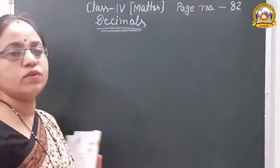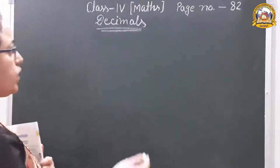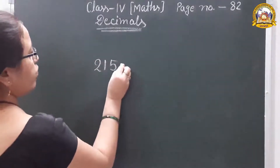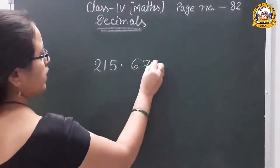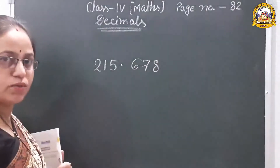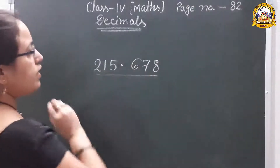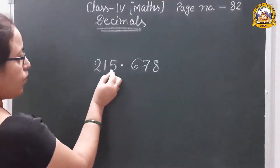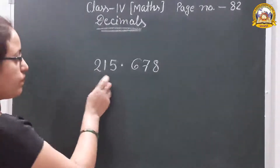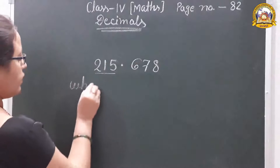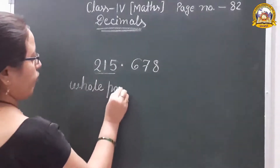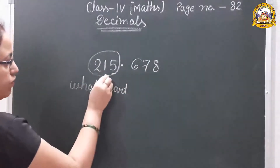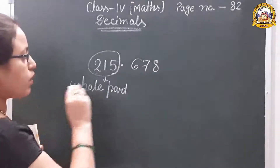What do you know about decimals and how to write a decimal number? Suppose a number: 215.678. It is a decimal number. Before the decimal point, we have written 215 — that is called the whole part. 215 is the whole part because it is before the decimal.